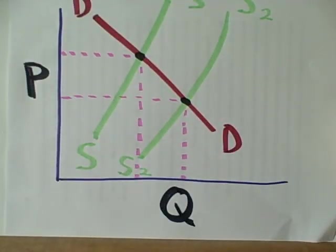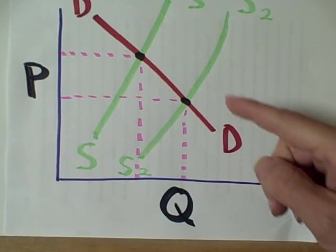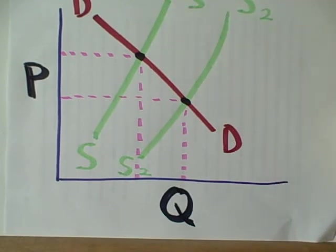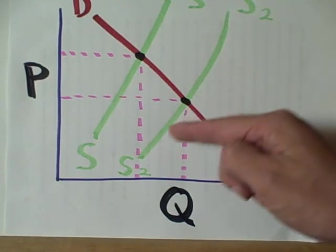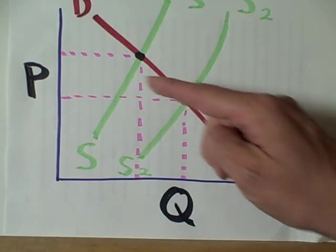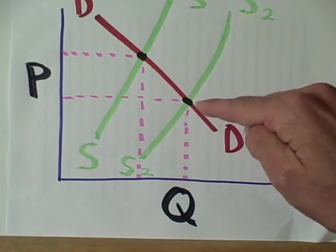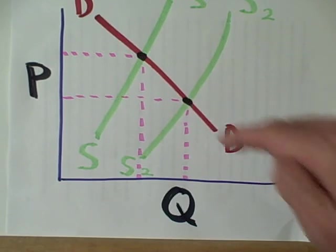This is what happens when the demand curve stays the same but supply increases by moving to the right. We see that a shift in supply because maybe the cost of production has gone down or more competitors come into the market. When the supply curve shifts right to increase the total quantity out there, notice that the price tends to go down and the quantity supplied and consumed tends to get higher.